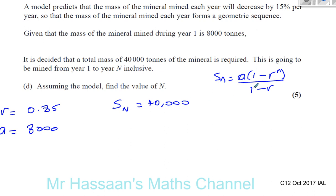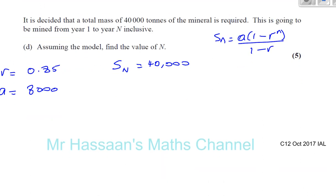We have all the information except for N. We know SN is 40,000, A is 8,000, and R is 0.85. We only have to find what N is. That's what we're going to deal with in this part of the question.